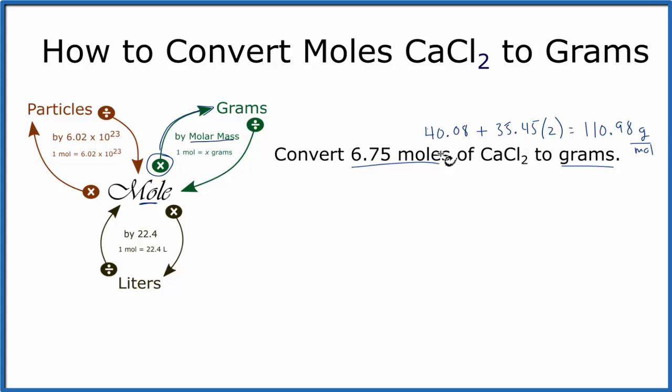It's also a conversion factor for converting from moles to grams. We'll multiply what we're given by the molar mass we just found, and that gives us grams. We have 6.75 moles of CaCl2. We'll multiply that by the molar mass, 110.98 grams per mole, and we're looking for grams.